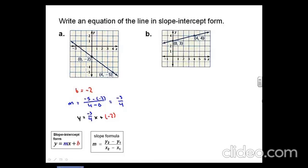Part B. We're going to follow the same exact process as we did in part A. First, we're going to find the y-intercept, or in other words, when x equals 0. So when x equals 0, y equals 3. Therefore, our y-intercept is going to be 3.